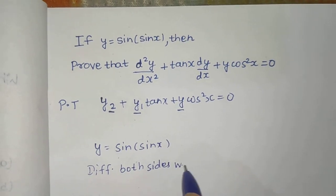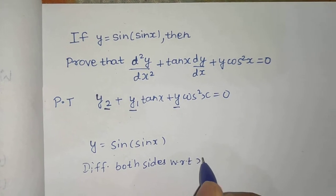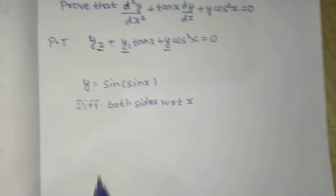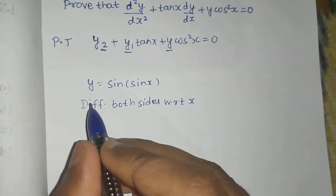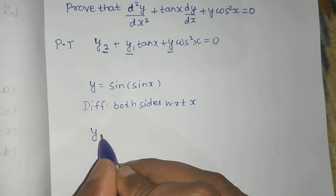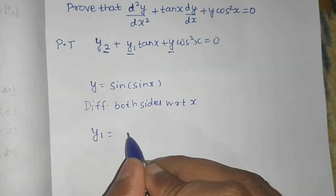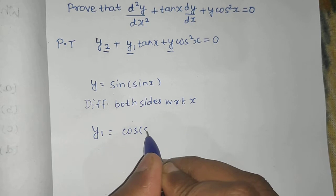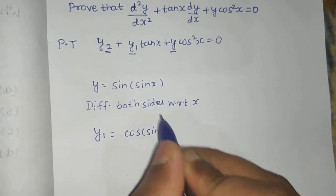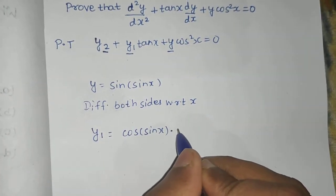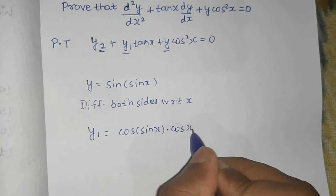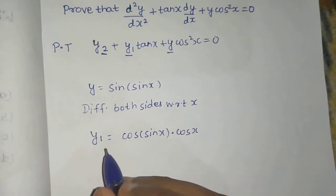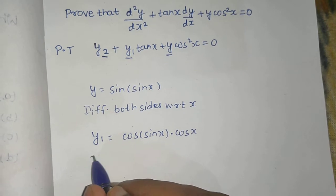So we will get y1, the derivative of y is y1, equals to derivative of sine is cos, so cos of sine x. We go inside, we get sine x, derivative of sine x is cos x. Now differentiating this once again.